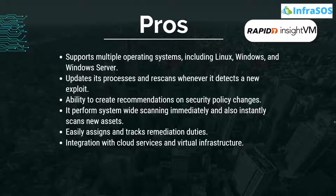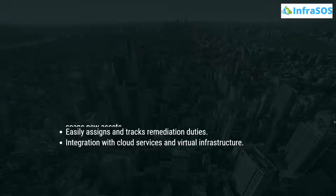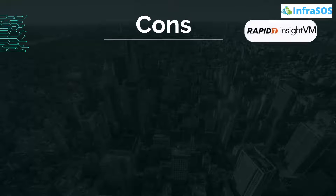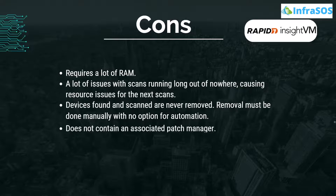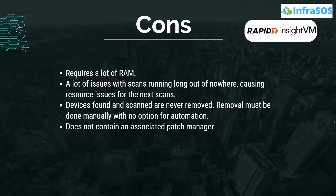Some of the cons of Rapid7 are that it requires quite a large amount of RAM, there are issues with scans running long unexpectedly causing resource issues for the next scan, and devices found and scanned are never removed — removal must be done manually with no option for automation at all.